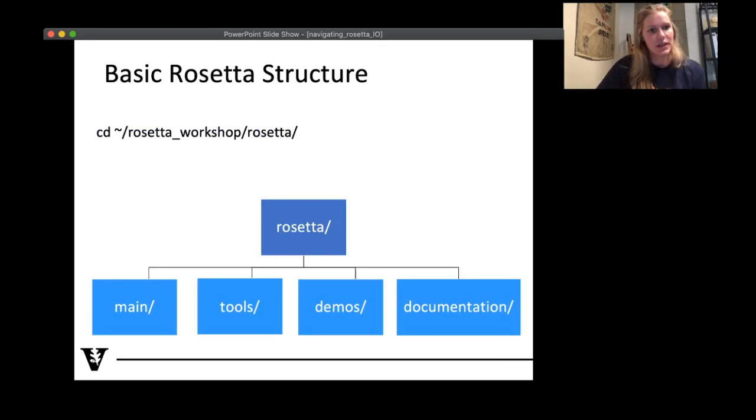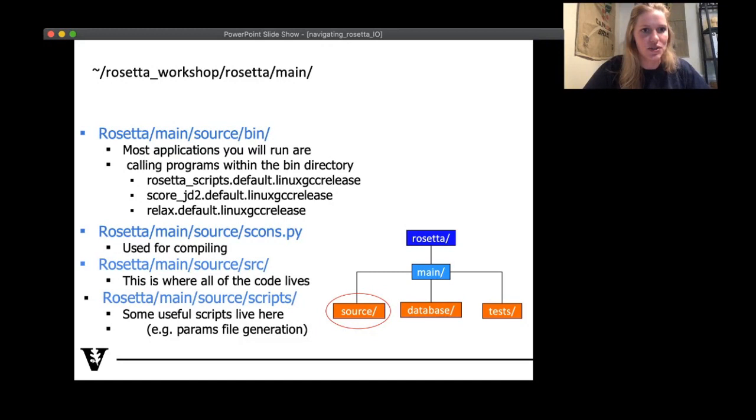So basic Rosetta structure. If you want to follow along with me, I would encourage that so you can get acquainted with the command line, especially if you're not very familiar with working in a terminal. So we can cd into your base Rosetta directory. And if you do an ls command within Rosetta, you're going to see four different things. You're going to see main, you're going to see tools, you're going to see demos and documentation. So let's dive into each of these individually, starting with main. And this is where most things live. So this main/source/bin directory, we've already seen this a couple of times just in this short talk. This is where your applications live. This is where your score_jd2 lives. This is where your Rosetta scripts live. And you're going to be calling this a fair amount over the next couple of days.